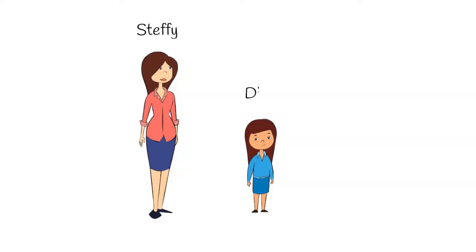This is Steffi and her daughter Diana. Diana has frequent tantrums in order to access things that she wants. To reduce this behavior, Steffi has been using differential reinforcement of alternative behavior with extinction.